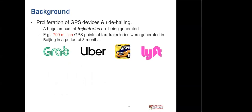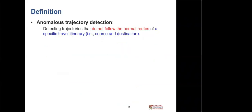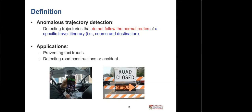With the proliferation of GPS devices and ride-hailing services such as Uber and Lyft, a huge amount of trajectories are being generated. These trajectories are represented as sequences of sampled GPS points, which characterize the mobility of moving objects. As trajectory data is of great use in real-world applications, the detection of anomalous trajectories has become a critical concern. We define anomalous trajectories as those that do not follow normal rules between a given source and destination. Applications include preventing taxi fraud — where drivers take unnecessary detours to overcharge passengers — and sensing unusual transportation events such as road construction or car accidents.